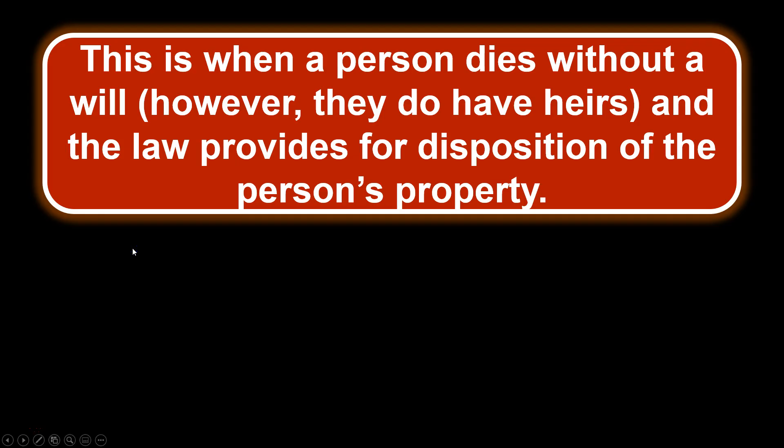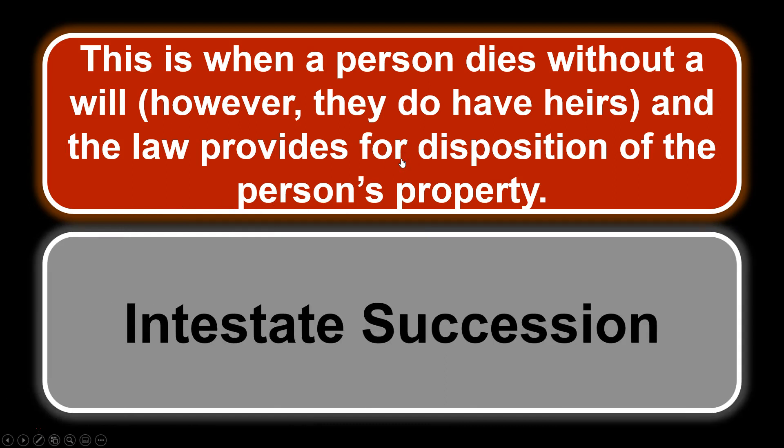This is when a person dies without a will, however they do have heirs, and the law provides for disposition of the person's property. So they don't have a will, but they do have heirs. Because there's no will, the devisor didn't leave a way for it to be distributed, so the law will provide for how the property is disposed. When they do have heirs, we call this intestate succession.